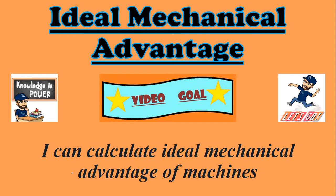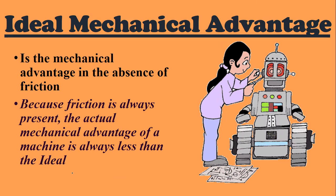I can calculate ideal mechanical advantage of machines. So, what is ideal mechanical advantage? It is the mechanical advantage in the absence of friction — in a perfect universe if there was no friction. But there's always friction. Because friction is always present, the actual mechanical advantage of a machine will always be less than ideal. You can calculate both for any machine, but actual will always be less than ideal because of friction.